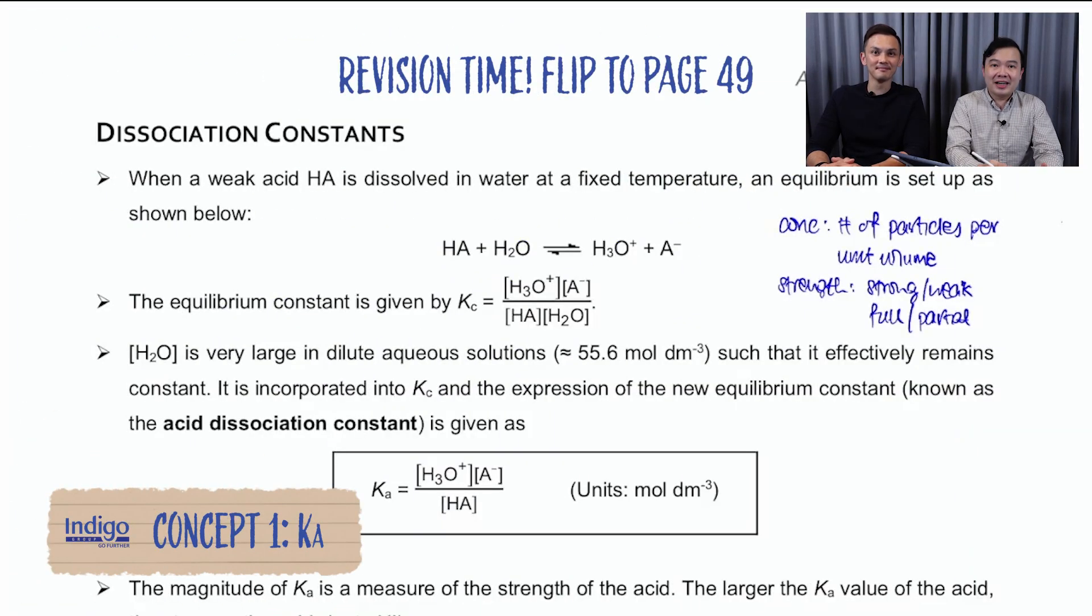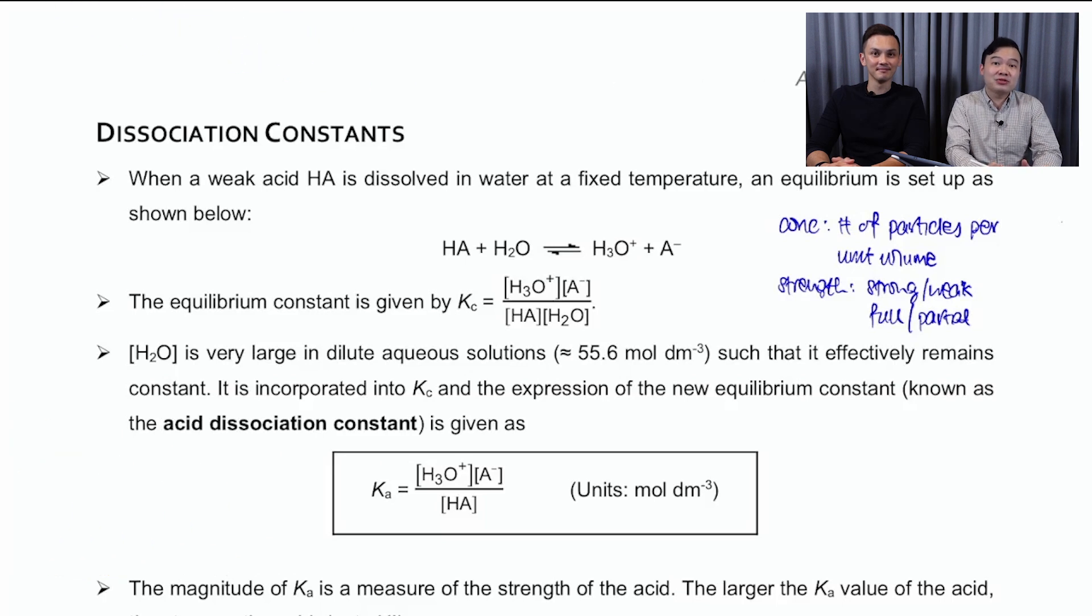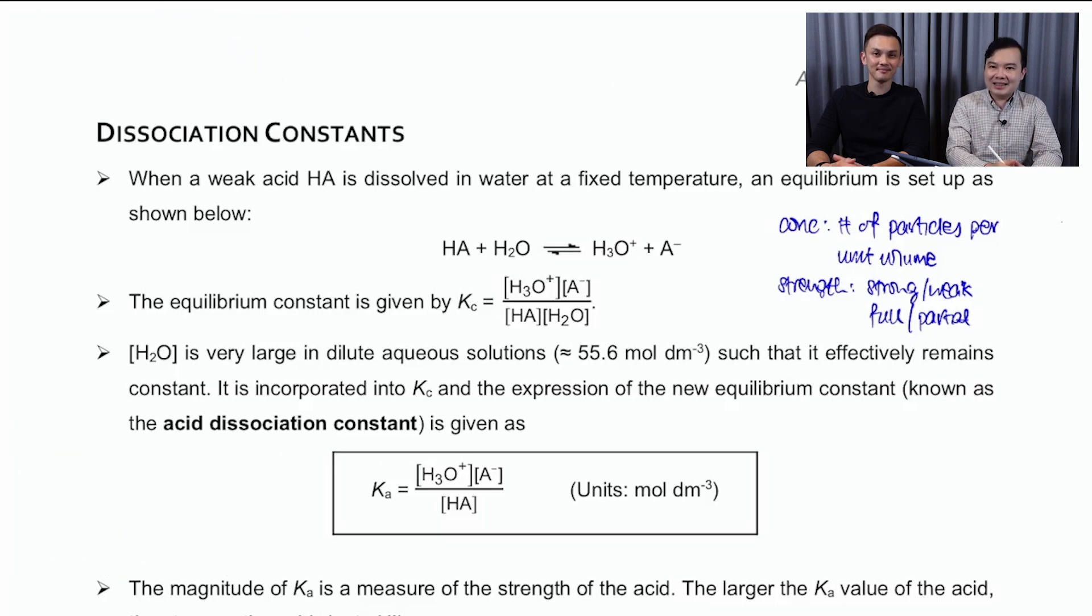The first concept is on the idea of strength versus concentration of acid. You understood from last lesson that the concentration refers to the number of particles per unit volume, whereas strength is a totally different concept. It's talking about the percentage dissociation. For a strong acid, you're going to undergo full dissociation and weak ones is going to be partial dissociation.